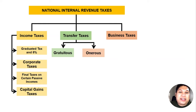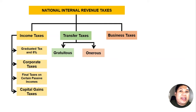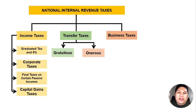Contrary to gratuitous transfer, in an onerous transfer the transferee is obliged to compensate the transferor — to pay something in return. For example, in a transfer between a seller and buyer, the seller only transfers ownership to the buyer if the buyer pays the seller. That is onerous, because it is burdensome on the part of the buyer.